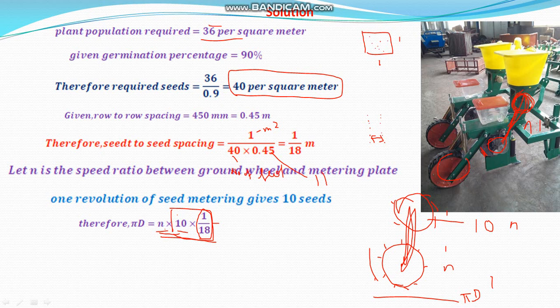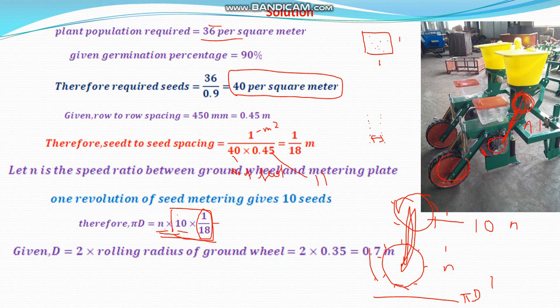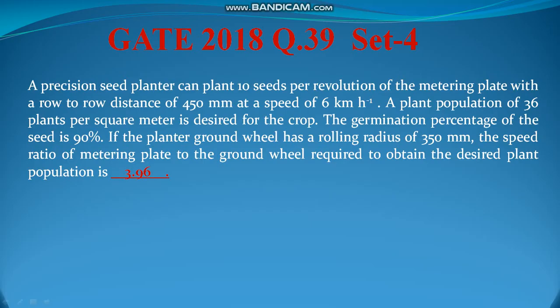Now d is the diameter of the ground wheel. The rolling radius of the ground wheel is given as 0.35 m. Therefore the diameter of the ground wheel is equal to 2 times r, which is 0.7 meter. Putting it into the equation: pi into 0.7 equals n into 10 into the seed spacing (1 by 18). Solving this gives the speed ratio between the ground wheel and the metering plate. The answer is 3.96. The desired plant population of 36 plants per square meter is achieved.